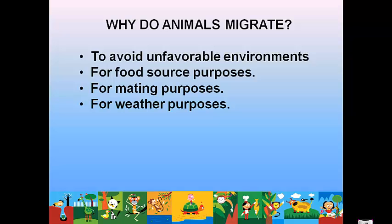Why do animals migrate? There are several reasons. First, to avoid unfavorable environments — in winter it may get very cold with little food. Second, for food source purposes — if they are running out of food in a particular place, they may migrate to where there's more. Third, for mating purposes — salmon return to their place of birth to mate and reproduce, and turtles return to the beach where they were born in order to mate.